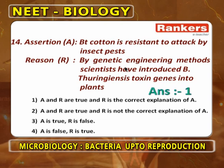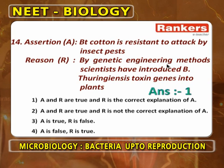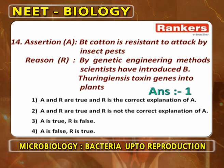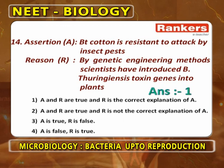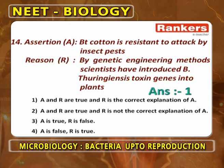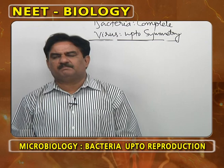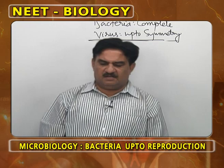Assertion-reasoning: Bt cotton is resistant to attack by insect pests — correct. Bt cotton is cotton infested with Bacillus thuringiensis. By genetic engineering methods, scientists have introduced Bacillus thuringiensis toxin genes into plants. Both A and R are correct and R is the correct explanation of A — first option.